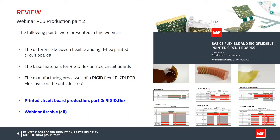Starting with the review from webinar PCB production part 2: that webinar covered the differences between flexible and rigid-flex printed circuit boards, descriptions of all base materials for rigid-flex PCBs, and the manufacturing process of a 1F 7RI PCB — meaning one flex layer on the top side and seven rigid layers. You can find all prior webinars in the webinar archive on the homepage.